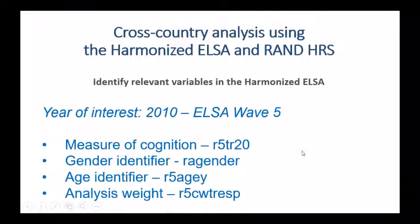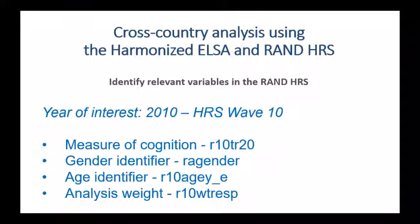We also want to identify relevant variables for the RAND HRS, which we saw using the concordance search on the Gateway. You can also use the RAND HRS codebook, which is very similar, to find these variables. One thing to note is that we're using wave 10 of the HRS data for 2010, because the HRS started in 1992 whereas ELSA started in 2002. So our variable names are going to be a little different because our naming convention uses the wave, not the year — this is something we'll need to adjust for when we create a combined dataset.